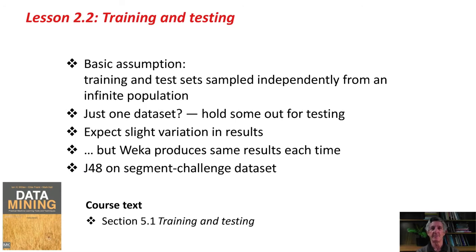That's this lesson. The basic assumption of machine learning is that the training and test sets are independently sampled from an infinite population, the same population. If you have just one dataset, you should hold part of it out for testing. Maybe 33%, as we just did, or perhaps 10%. We would expect a slight variation in results each time if we hold out a different set, but Weka produces the same results each time by design, by making sure it reinitializes the random number generator each time.